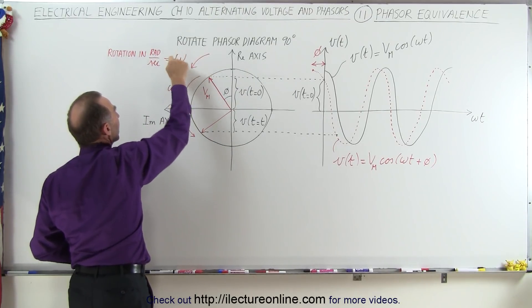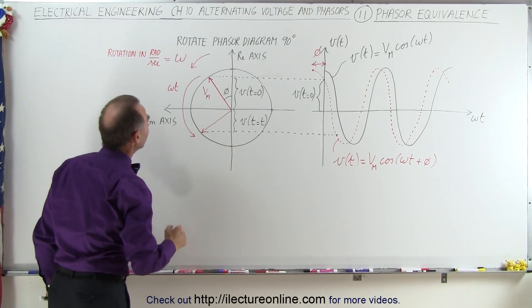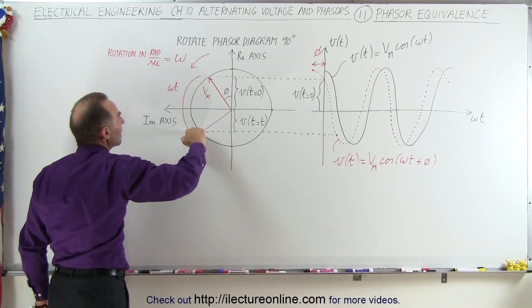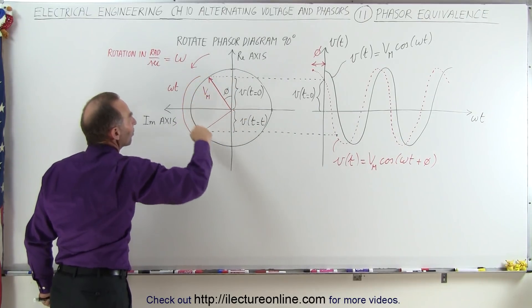We notice that we have a rotation in radians per second, which is represented by omega, that's the angular frequency. And if a certain amount of time elapses, let's say time equals t, then this would be the distance traveled around the phasor diagram.